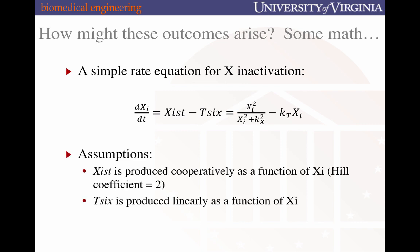Here we'll make a couple of assumptions. We're going to assume that Xist is produced cooperatively. We've seen cooperativity in the setting of enzyme activities earlier in the semester. Here we're using cooperativity to describe the rate of production of Xist as a function of the Xi state. And we're going to further postulate that the Hill coefficient, the exponent of the terms in the Hill function, is 2. Second, we're going to assume that Tsix is produced linearly as a function of an active X.